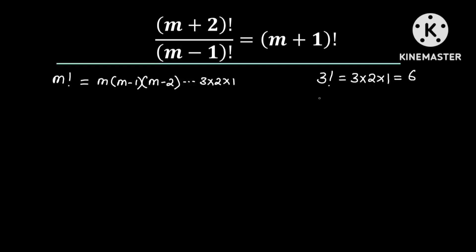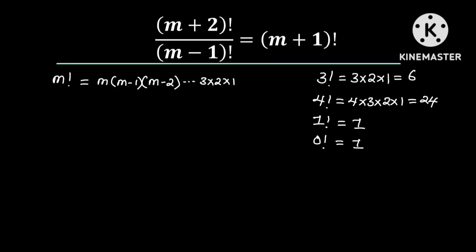If we take 4!, we have 4 × 3 × 2 × 1 = 24. From this definition we can see that 1! = 1, and conventionally 0! is also equal to 1. Now let's get back to the equation.